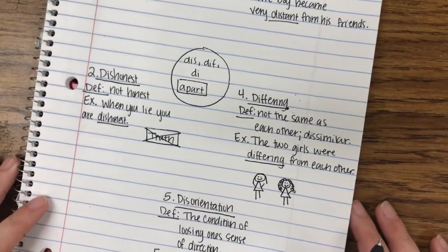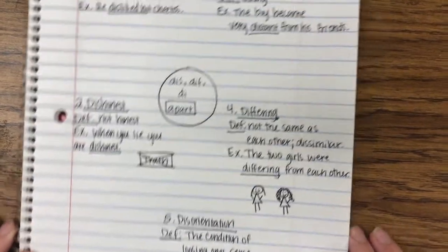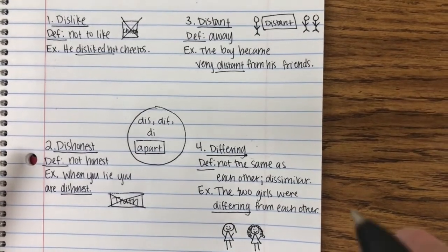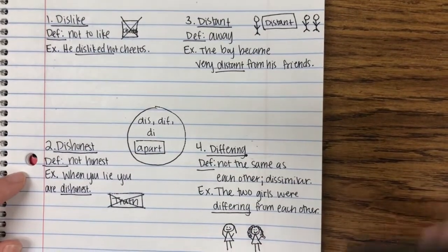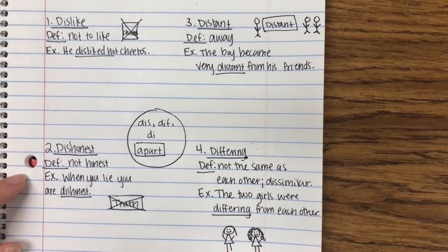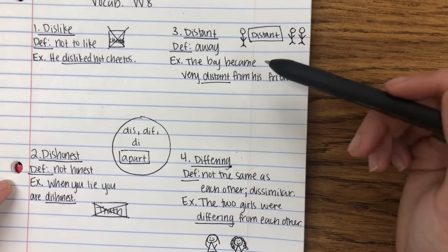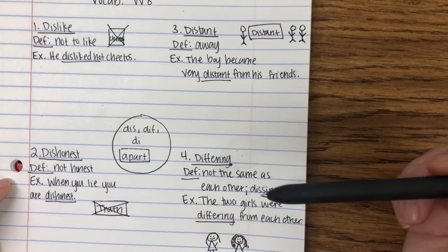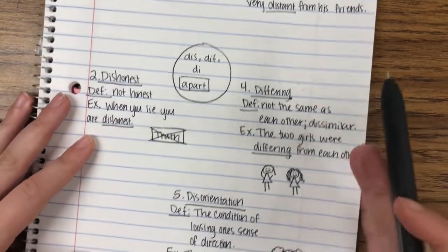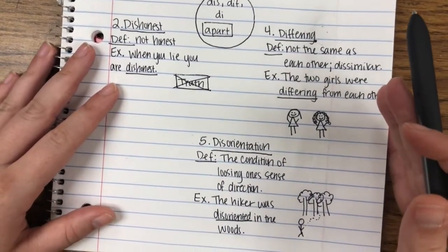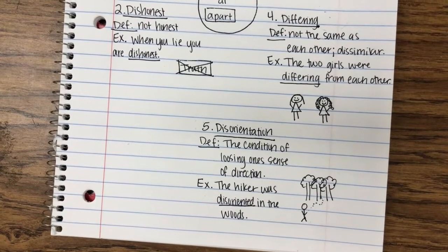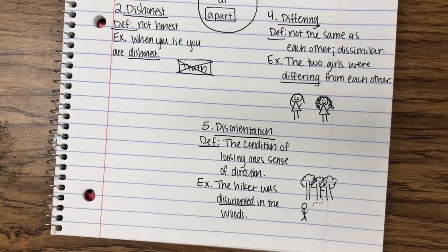Okay, so those are our five words for this week. We have our first three here. So we have dislike, which is not to like. Dishonest, which is not honest. Distant, which means away. Differing, not the same as each other, dissimilar. And then finally, we have disorientation, which is the condition of losing one's sense of direction. And the hiker was disoriented in the woods.